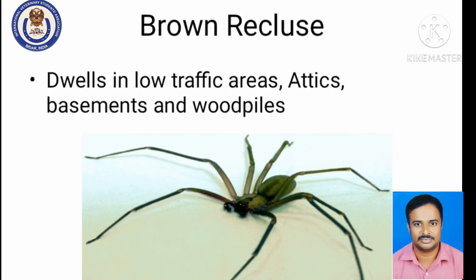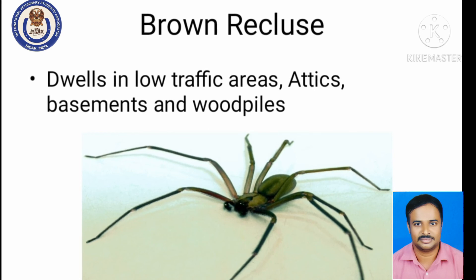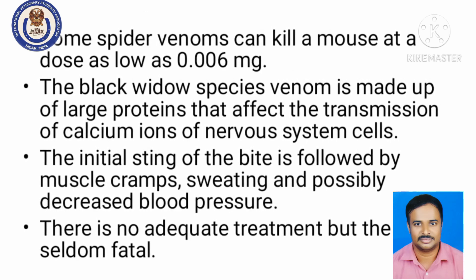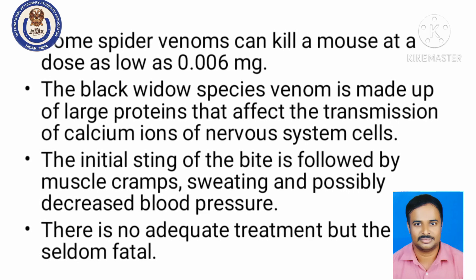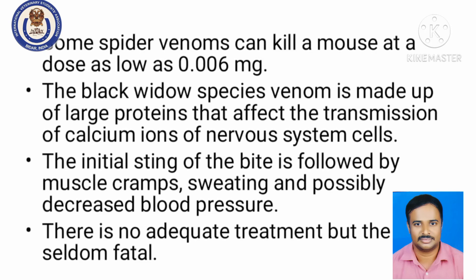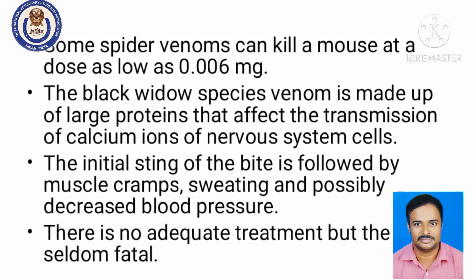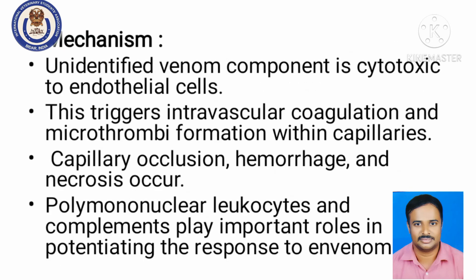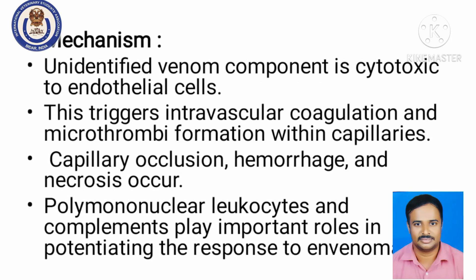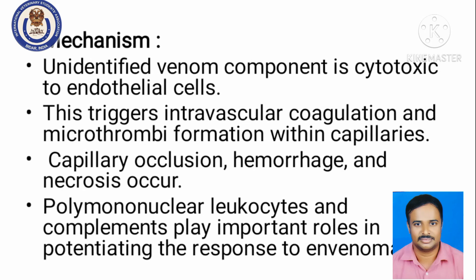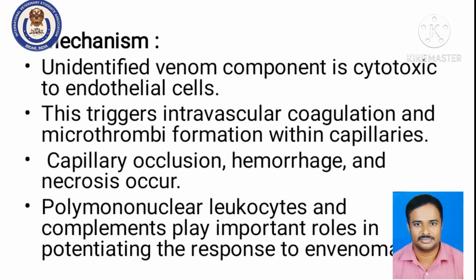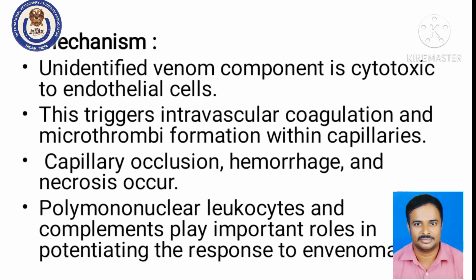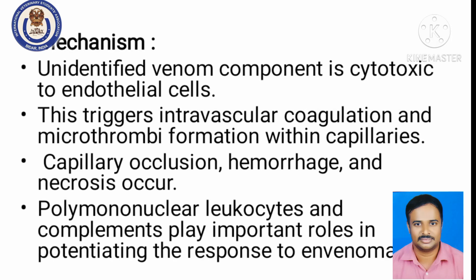Symptoms of spider poisoning include sweating and muscle cramps, mainly because of decreased blood pressure. Spider venom induces cytotoxicity to endothelial cells, triggering intravascular coagulation and resulting in microthrombi formation within capillaries, leading to capillary occlusion, hemorrhage, and necrosis. The brown recluse bite venom contains sphingomyelinase and a dermonecrotic factor. Initially the bite is painless, but as time prolongs there is more pain. Pruritus is seen at the bite site and in most cases resolves on its own within a few days, but in severe cases erythema and necrosis can occur at the bitten site.